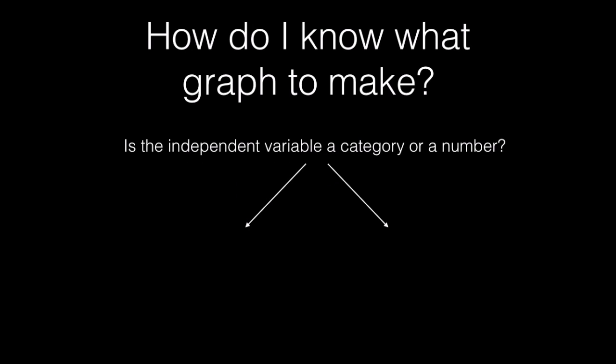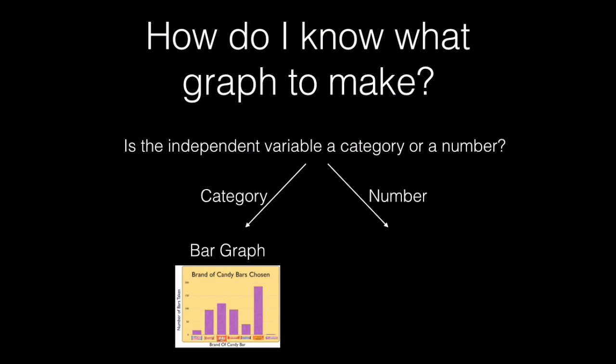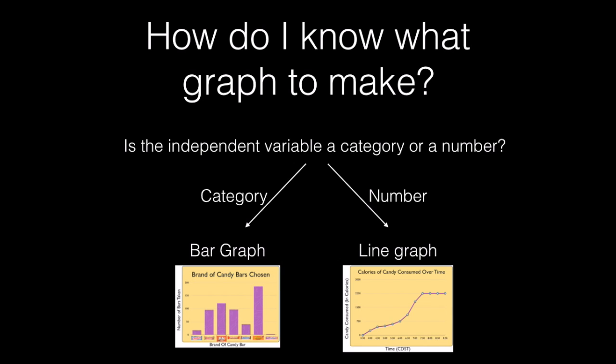Let's review what we have learned from this presentation. One of the things we need to address is: how does one know what type of graph to make? The first question you should ask yourself is, is the independent variable a category or a number? If you answer that it is a category — such as the brand of candy — that means you need to make a bar graph. If you answer that the independent variable is a number, that means you need to make a line graph. Numbers such as time would count.